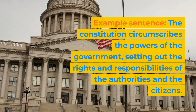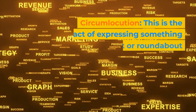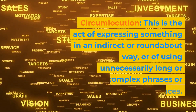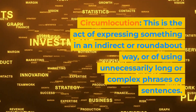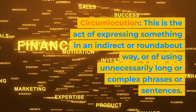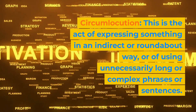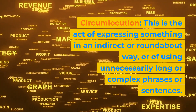Example sentence: the constitution circumscribes the powers of the government, setting out the rights and responsibilities of the authorities and the citizens. Circumlocution: this is the act of expressing something in an indirect or roundabout way, or of using unnecessarily long or complex phrases or sentences.